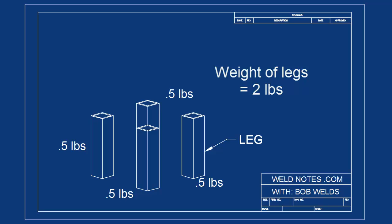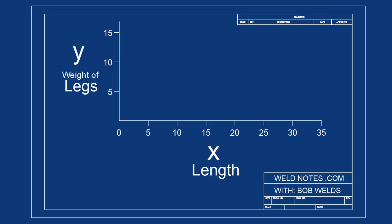Now, just for fun, let's look at that on the graph. We'll plot the length of the plant stand on the x-axis and the weight of the legs on the y-axis. Remember that our x-axis represents the length of the plant stand. If x is three inches long, the weight of the legs is two pounds. If x is six inches long, the weight of the legs is still two pounds. If x is 12 inches long, the weight of the legs is still two pounds.